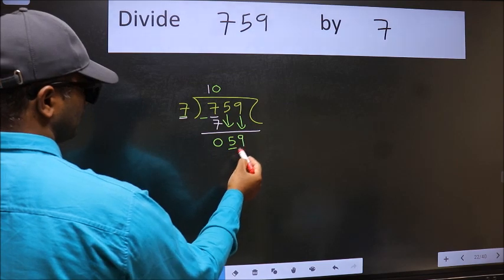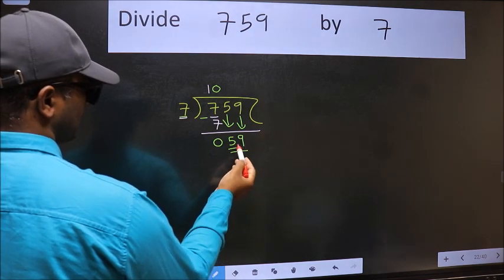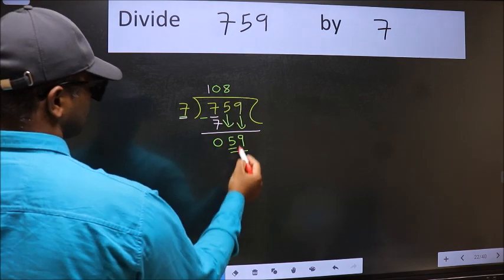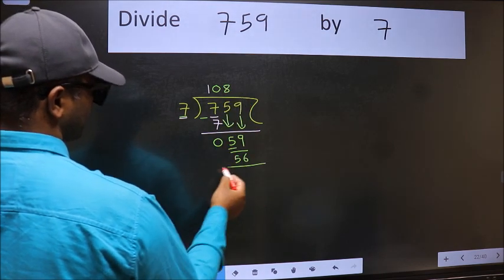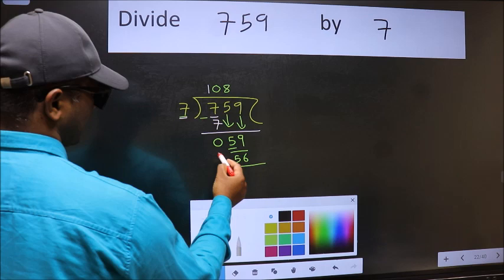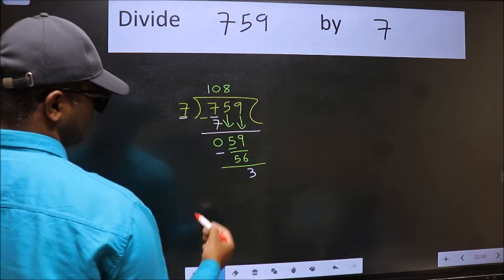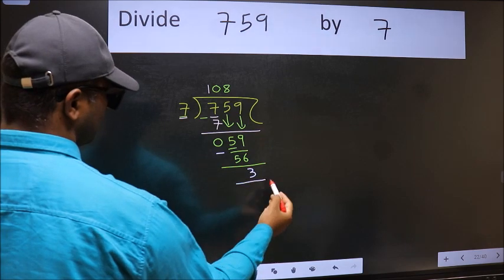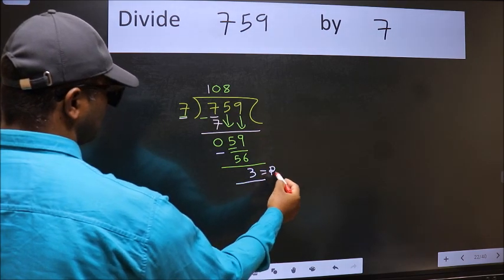Now 59. A number close to 59 in the seven table is seven eights, 56. Now we should subtract. We get three. No more numbers to bring it down, so we stop here. This is our remainder and this is our quotient.